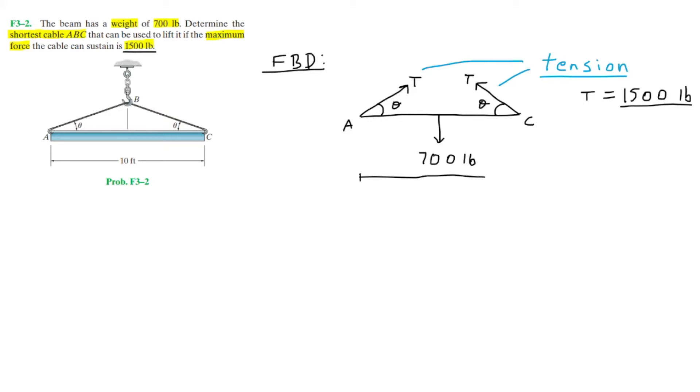In our free body diagram, we should also have the length of the beam, which is 10 feet. And we should also have our coordinate system, x, y. This is very important for representing the direction of our forces.